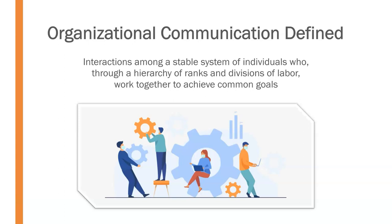Let's take a look at some of the constituent parts of that definition. First, organizational communication involves a stable system of individuals. This indicates that there is, in fact, a system or framework in which these individuals are operating. As we will learn, this system involves inputs, throughputs, and outputs, and both influences and is influenced by internal and external environmental factors. Additionally, there is a degree of stability and consistency to that system.